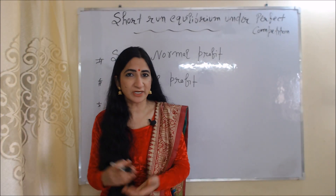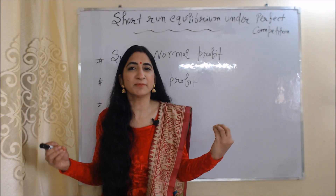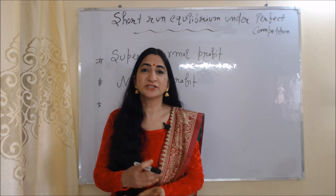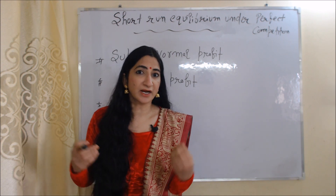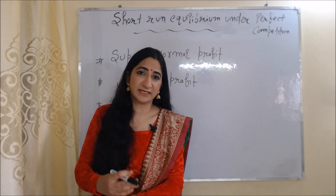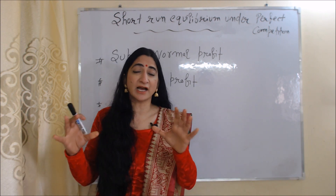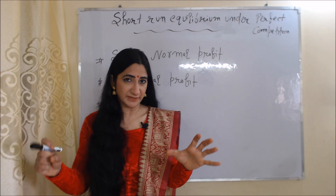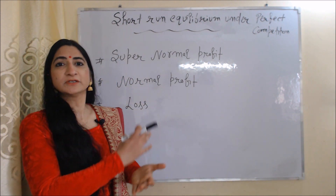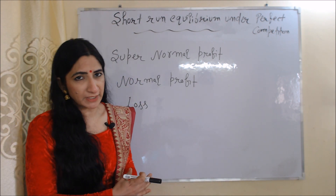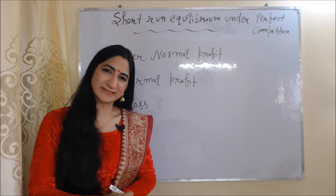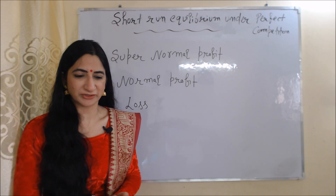In the short-run under a perfect competition market, a firm basically faces three kinds of equilibrium: super normal profit, normal profit, and loss. We will discuss each one by one.